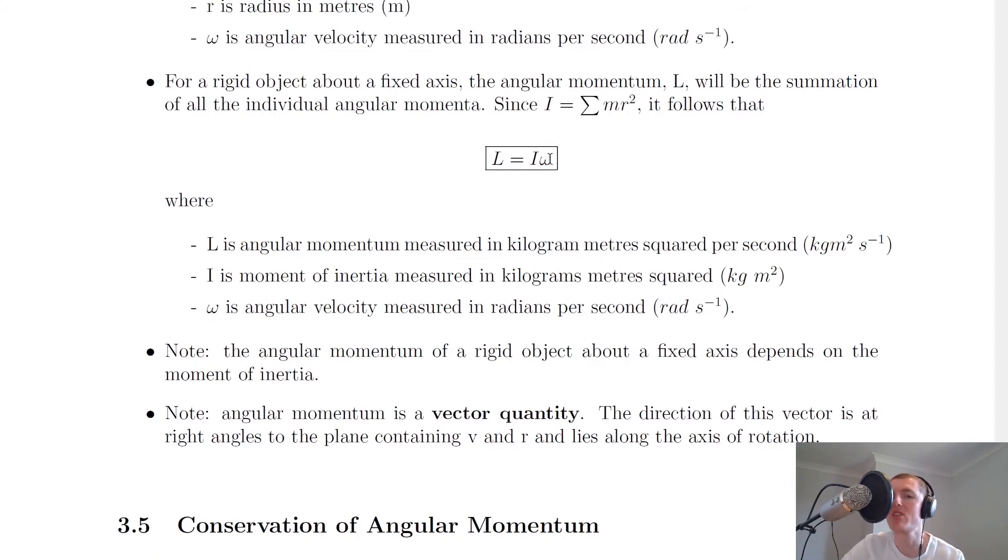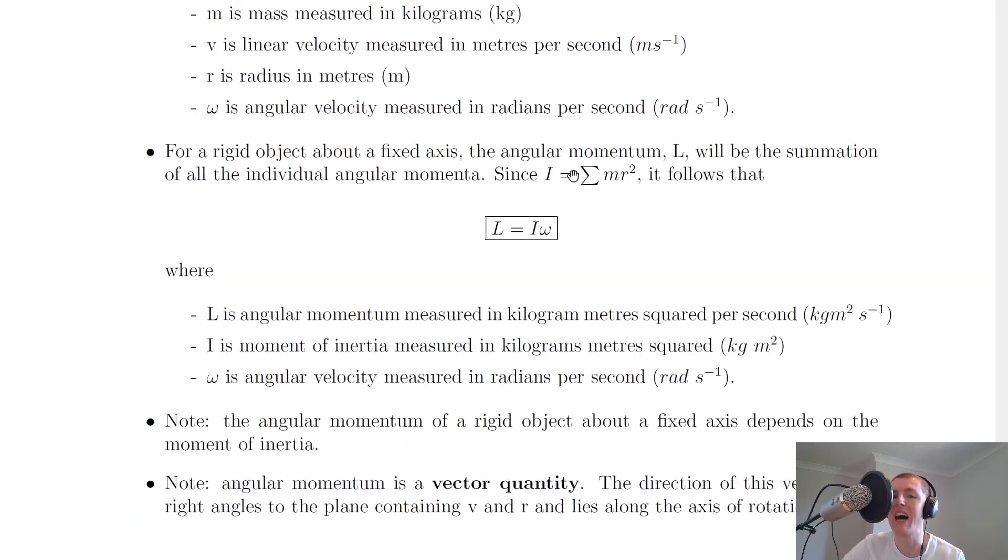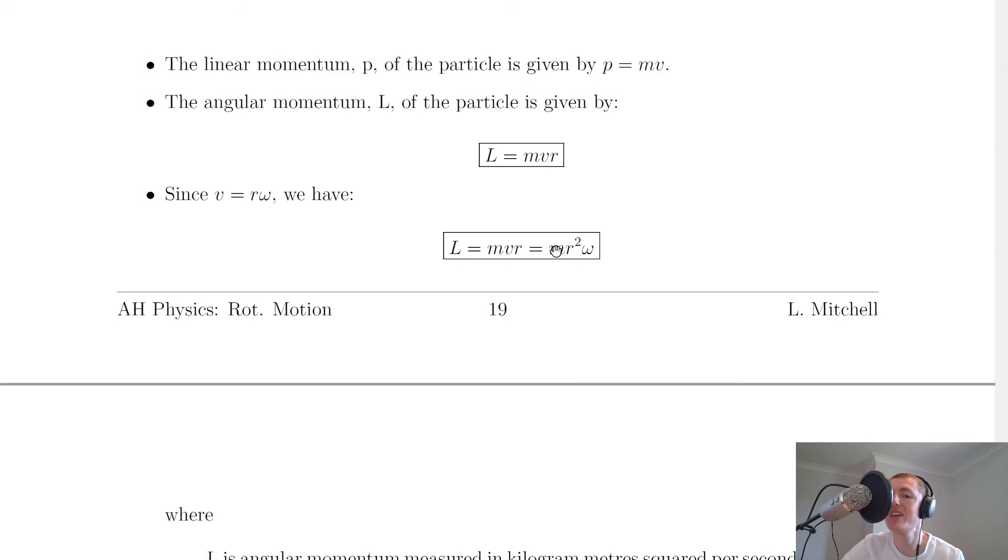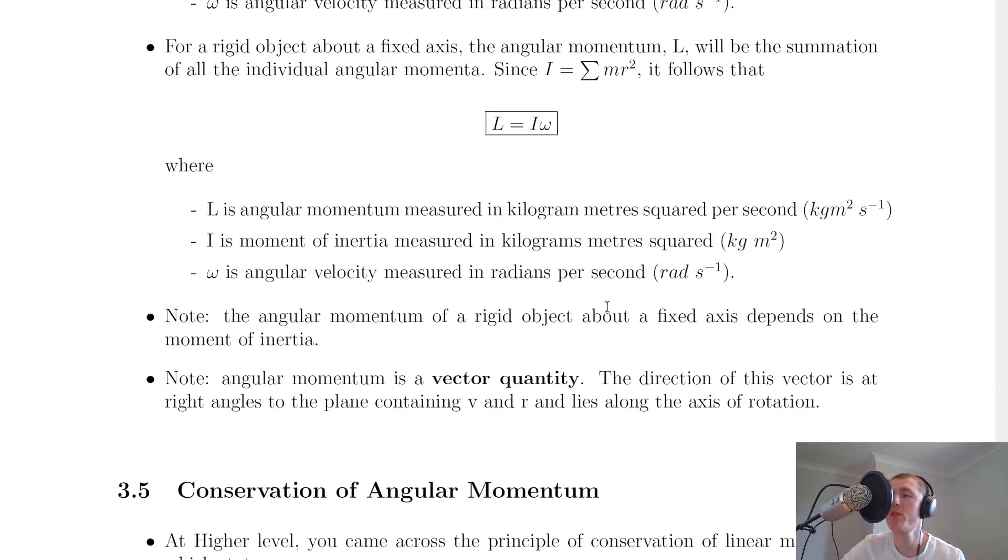So this is our expression for angular momentum of a rigid object, a rigid body, where it's the moment of inertia times the angular velocity of the object. So all we're doing is substituting in I for the sum of mr squared. So that is the mr squared from there, but we're saying because it's a rigid object, we're taking the sum over all the moments of inertia, all the masses.